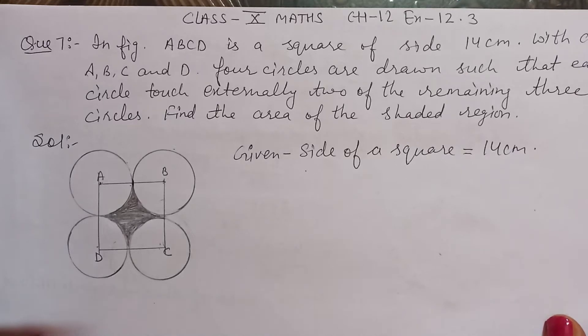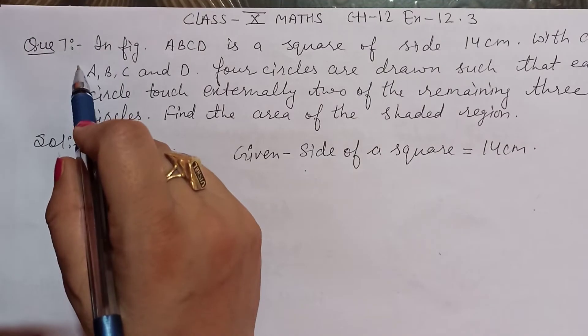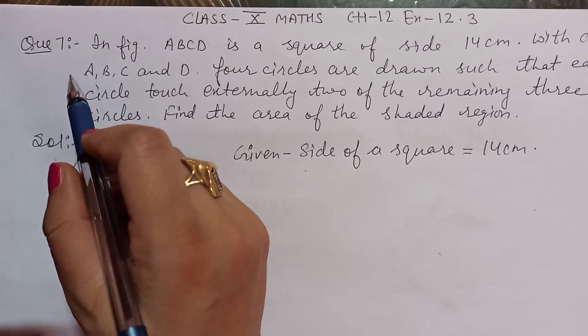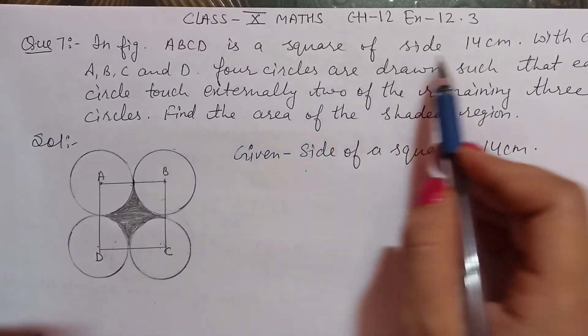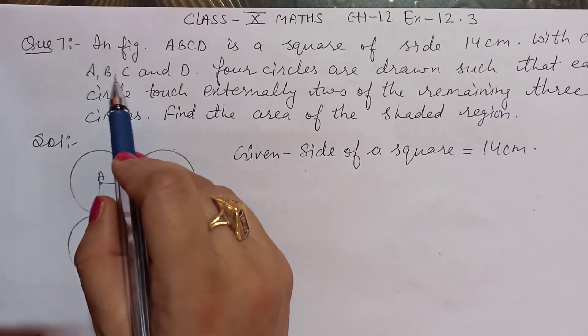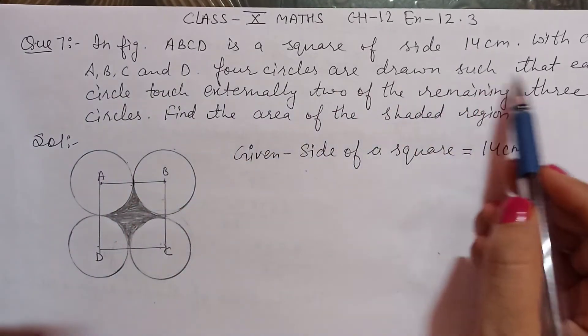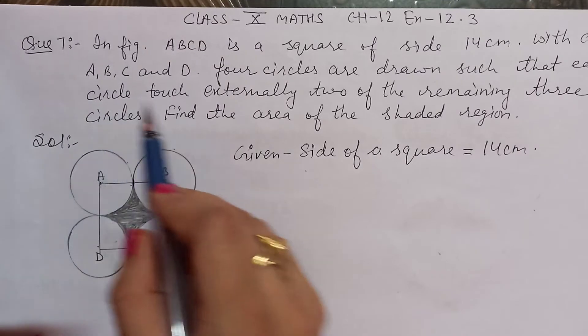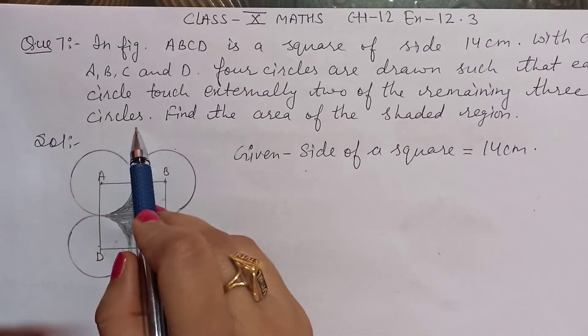Hello students, today we start class 10th math chapter 12 exercise 12.3 question number 7. Please like, share and subscribe this channel. In figure ABCD is a square of side 14 centimeter. With center A, B, C and D, four circles are drawn such that each circle touch externally two of the remaining three circles. Find